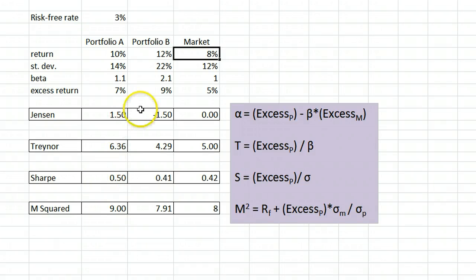Portfolio B shows no evidence of skillful investing. When the market is up 8%, someone picking investments completely at random with beta 2.1 and standard deviation 22% should have done better than the 12% that portfolio B actually returned. It under-performed the market on a risk-adjusted basis.